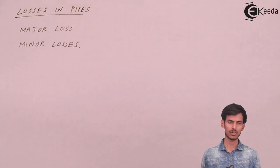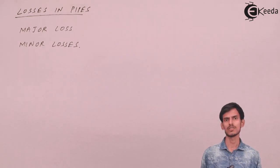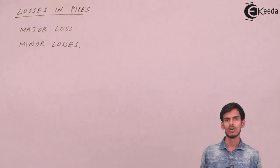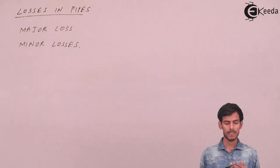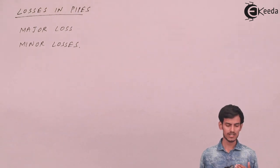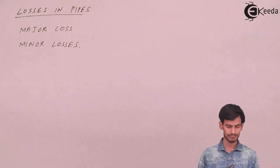Minor losses occur due to sudden changes in the diameter of the pipe, at sudden bends, or because of pipe attachments. All those things come under minor losses. To summarize: major loss is loss due to friction.